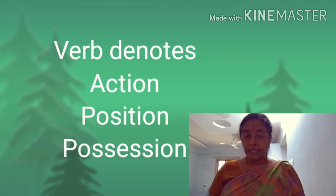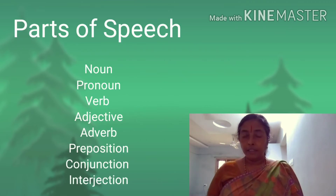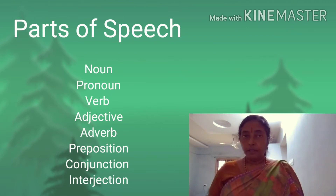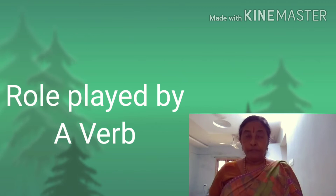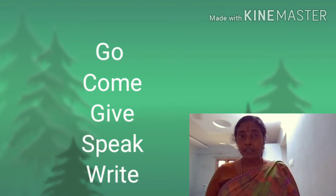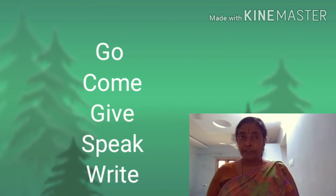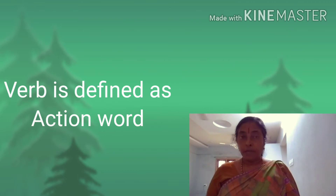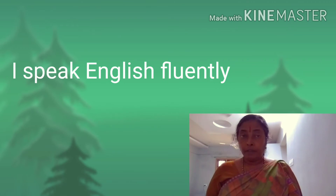Hi everyone. In our previous classes we learned about articles, and I already made a video on all different parts of speech. Amongst all eight parts of speech, verb plays a very important role — without verb we cannot construct any sentence. Verb itself conveys sense. For example, words like go, come, give, speak, write — all these words are considered as verbs. Normally we define verb as an action word, but we have to think more carefully and give a different definition to the verb.